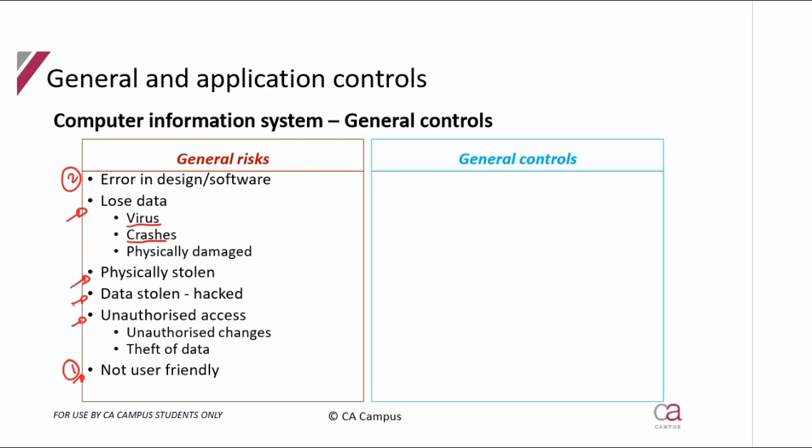Those are general risks a client faces when they decide to use a computer information system instead of going manual. But what are the risks if they choose a manual system? There's a risk that people don't know what to do, so there could be errors through the journaling, the GL, the TB, the financials. There's a risk they could have a fire and lose all their physical hard copy documents. There's a risk that people gain access to their premises and steal their journals, GLs, TBs, and financials.